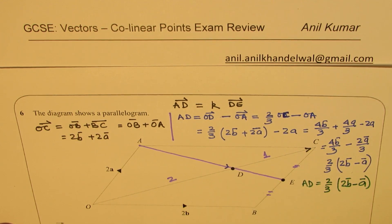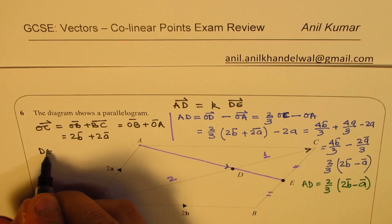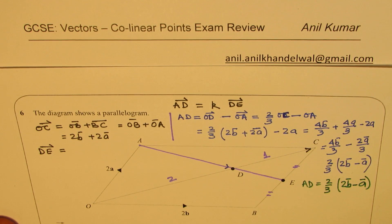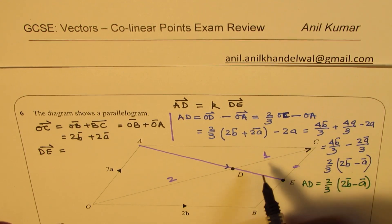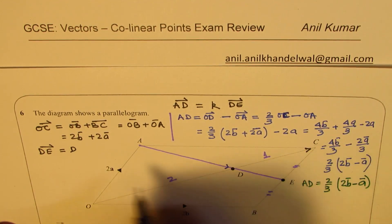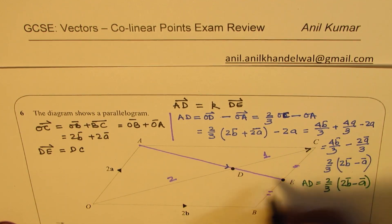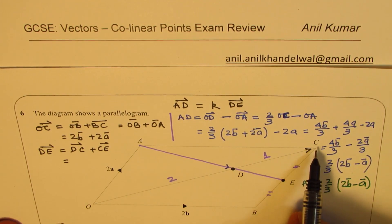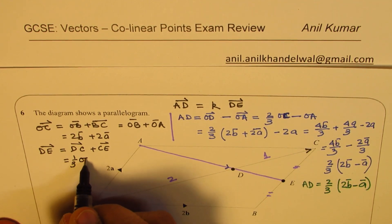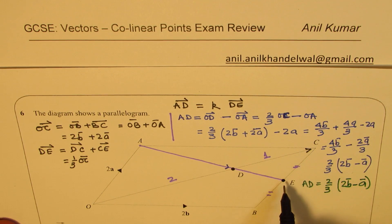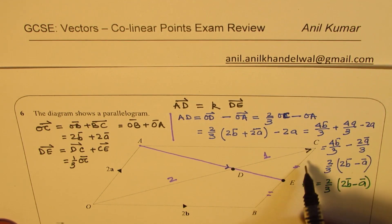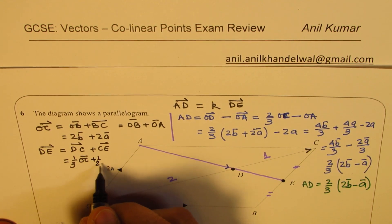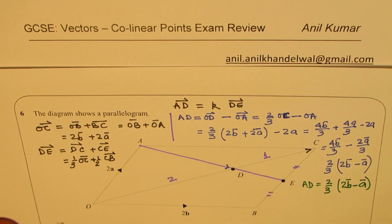Now let us figure out what is DE. Now D to E will be equal to, we can follow this part. We can go like this and then come back. So D to C, D to C plus C to E. Now D to C is 1/3 of OC. And C to E is half of CB. Okay.